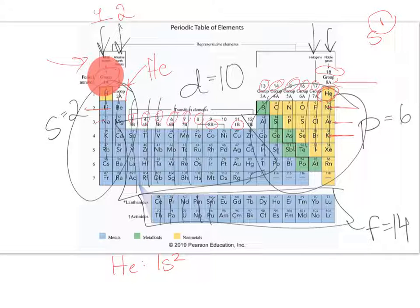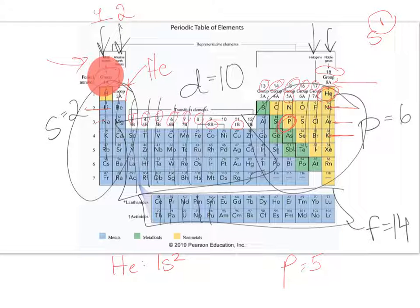To quickly determine how many valence electrons an element has, find it on the periodic table. For example, phosphorus is in group 5A — you use the 5, not the 15. So each phosphorus atom has five valence electrons. Being able to determine valence electrons quickly is going to be very important for the next couple of chapters.